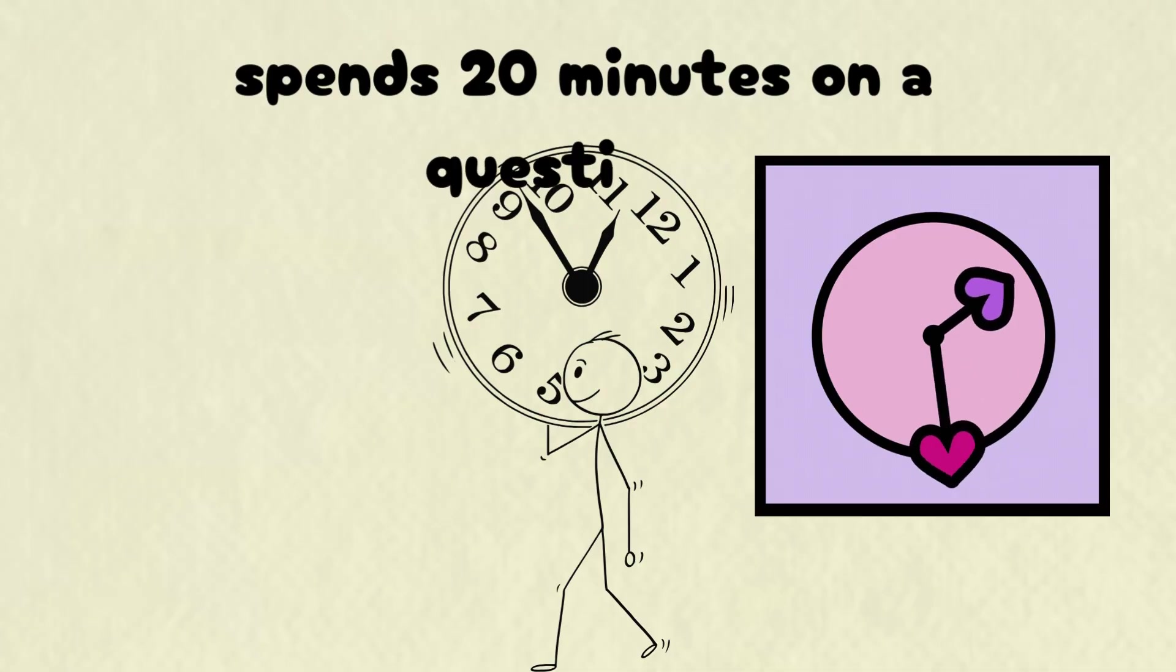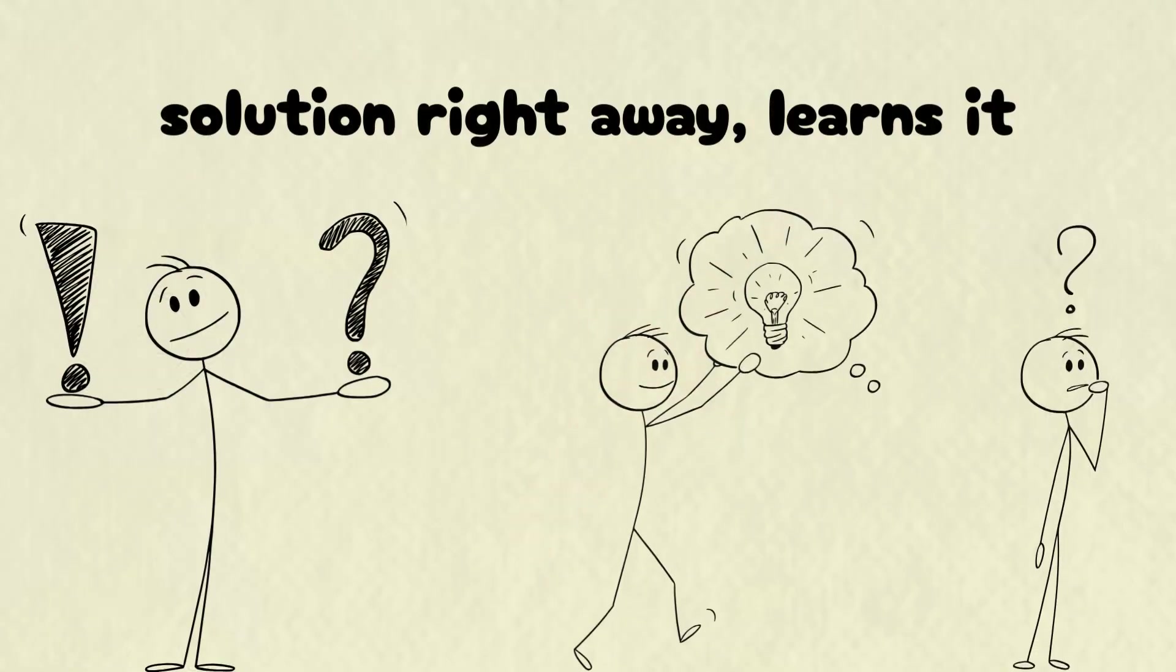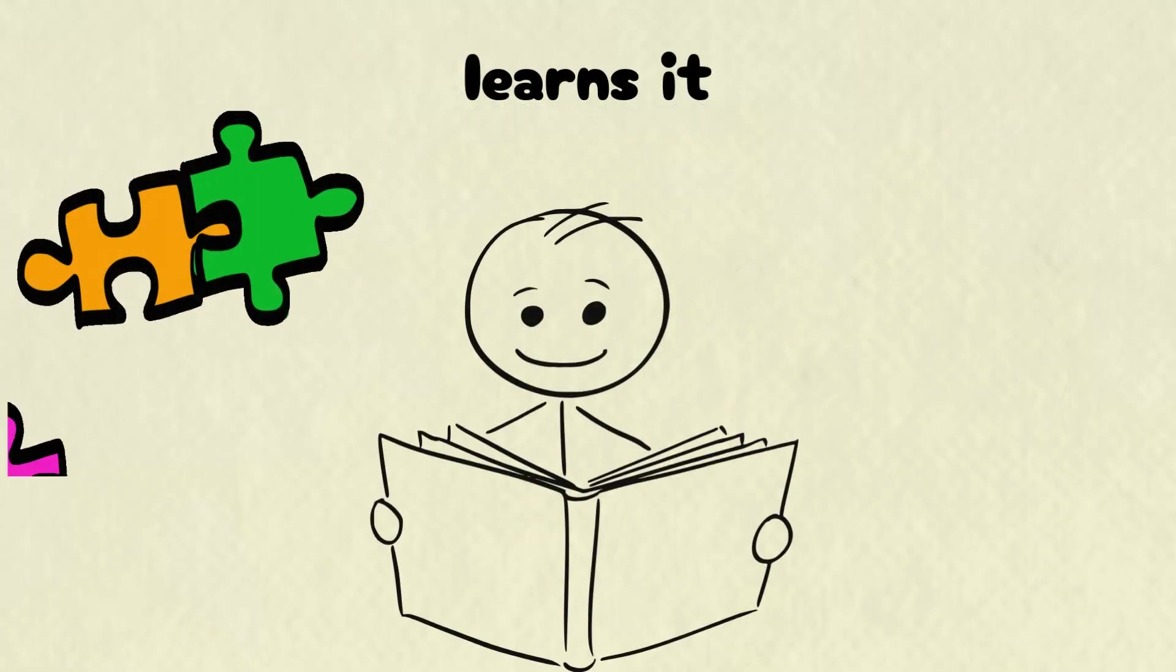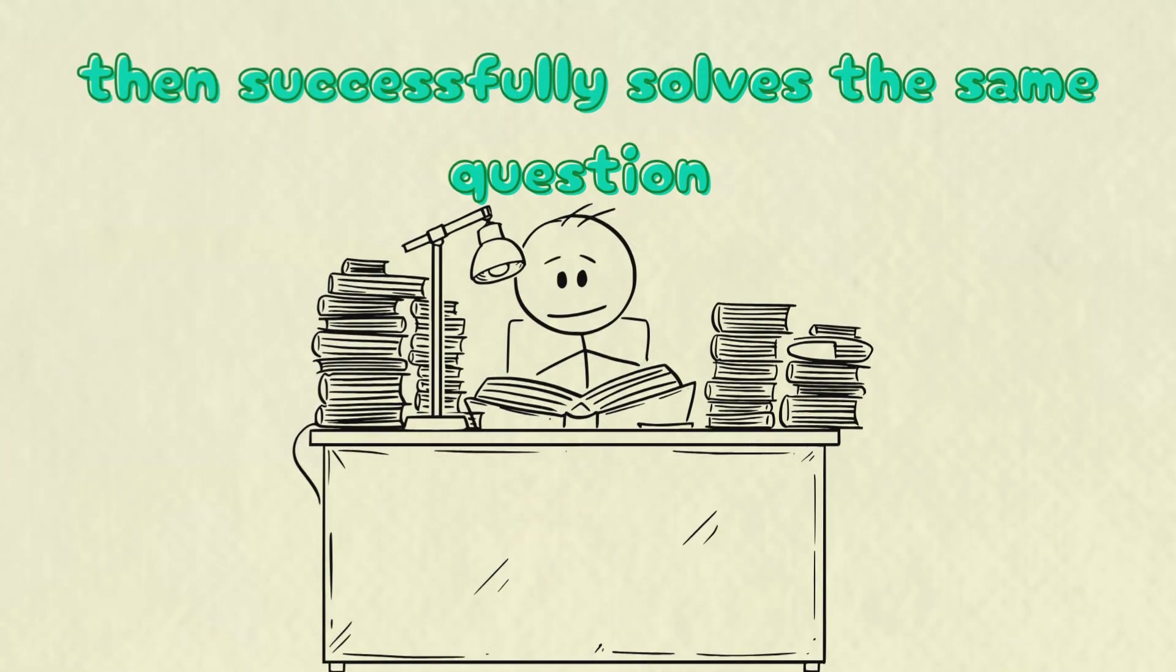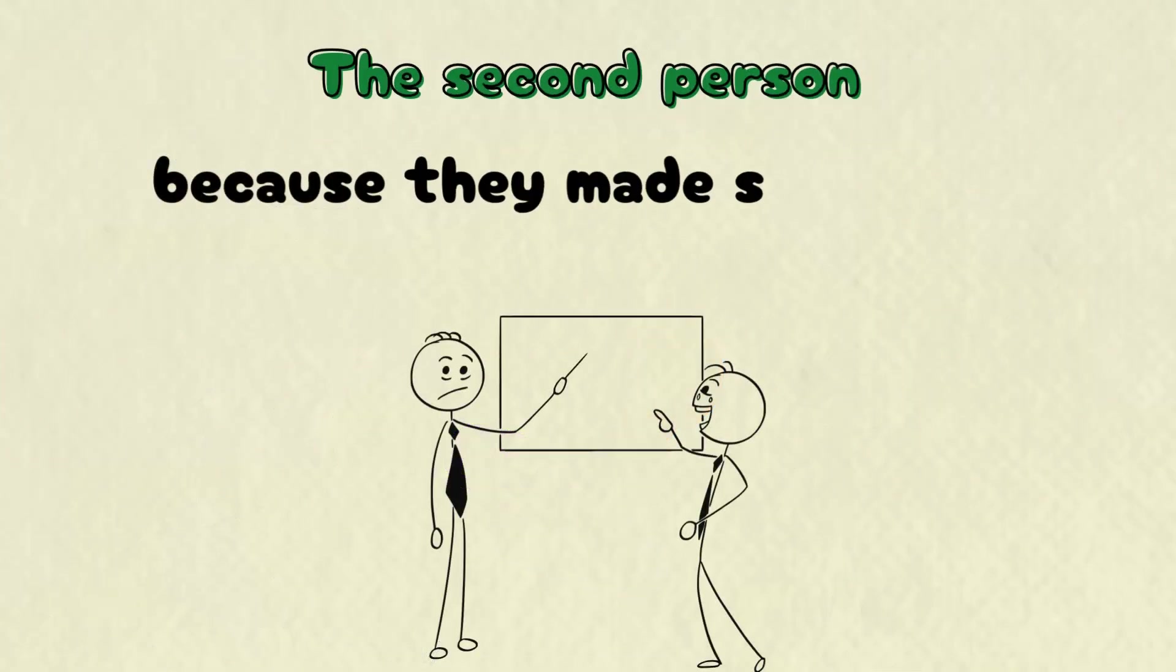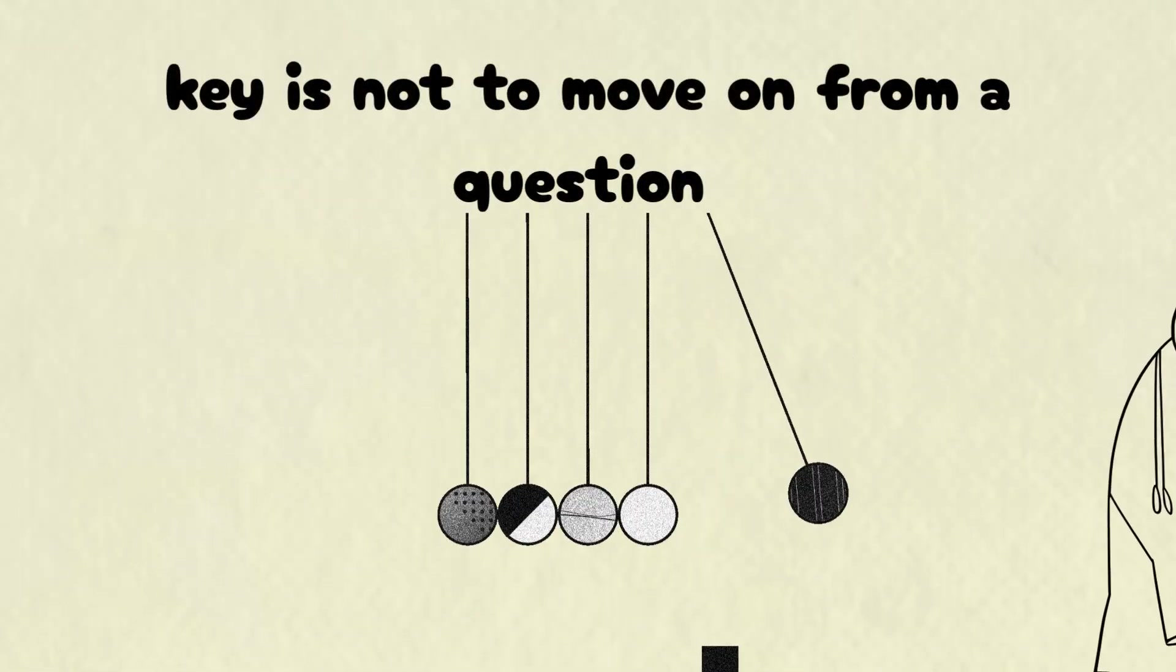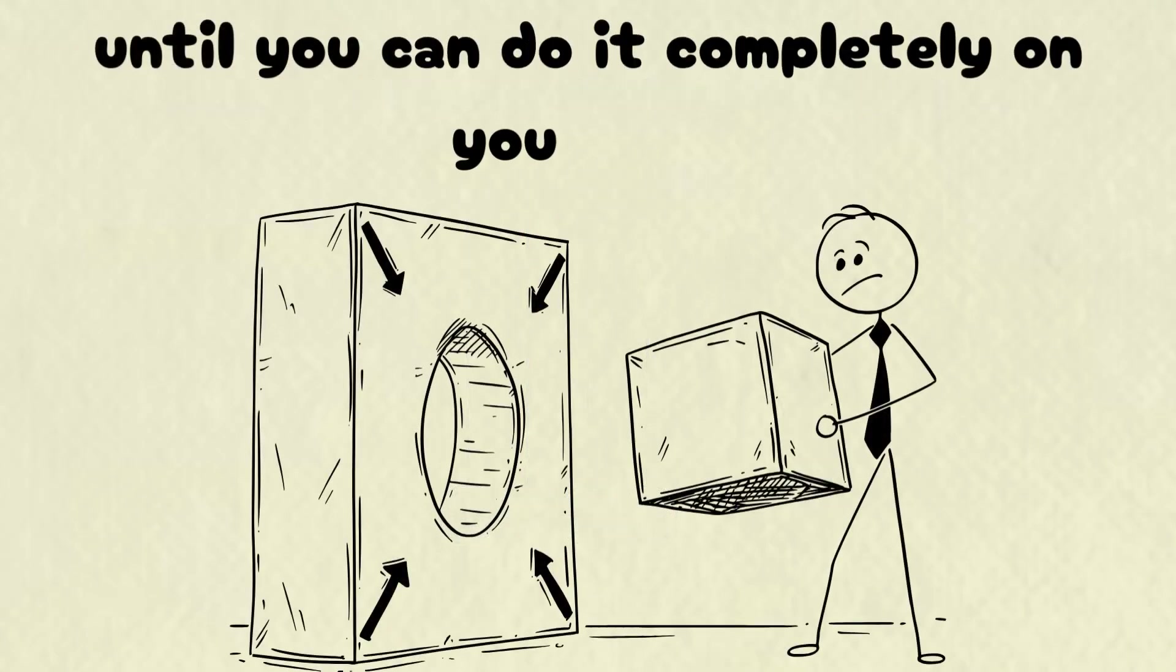Think about it this way. Imagine one person spends 20 minutes on a question, gets it wrong, and moves on frustrated. Another person looks at the solution right away, learns it, then successfully solves the same question on their own later. Who learned more? The second person, because they made sure they actually understood it. The key is not to move on from a question until you can do it completely on your own.